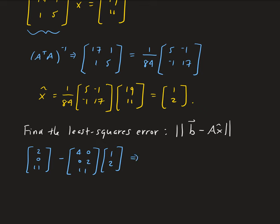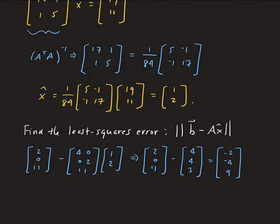This is going to give us 2, 0, 11, minus — let's see — 4, 4, 3. So then we have negative 2, negative 4, and — correction — 8.